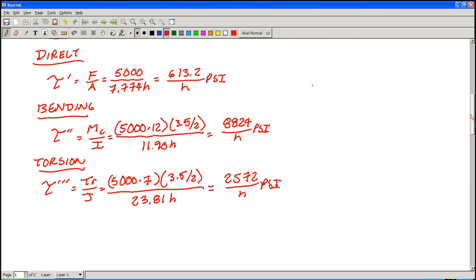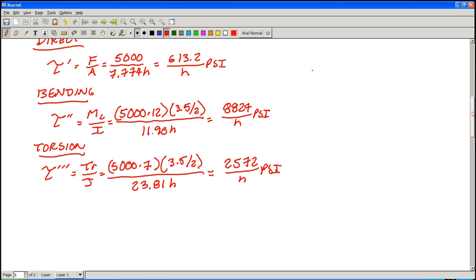Now all three of those are mutually perpendicular. None of them are parallel. It's possible in a problem like this to have some that are parallel, but in this case they're not. So they can all be added directly with a root sum square. And doing that we get a value of 92.14 over H.